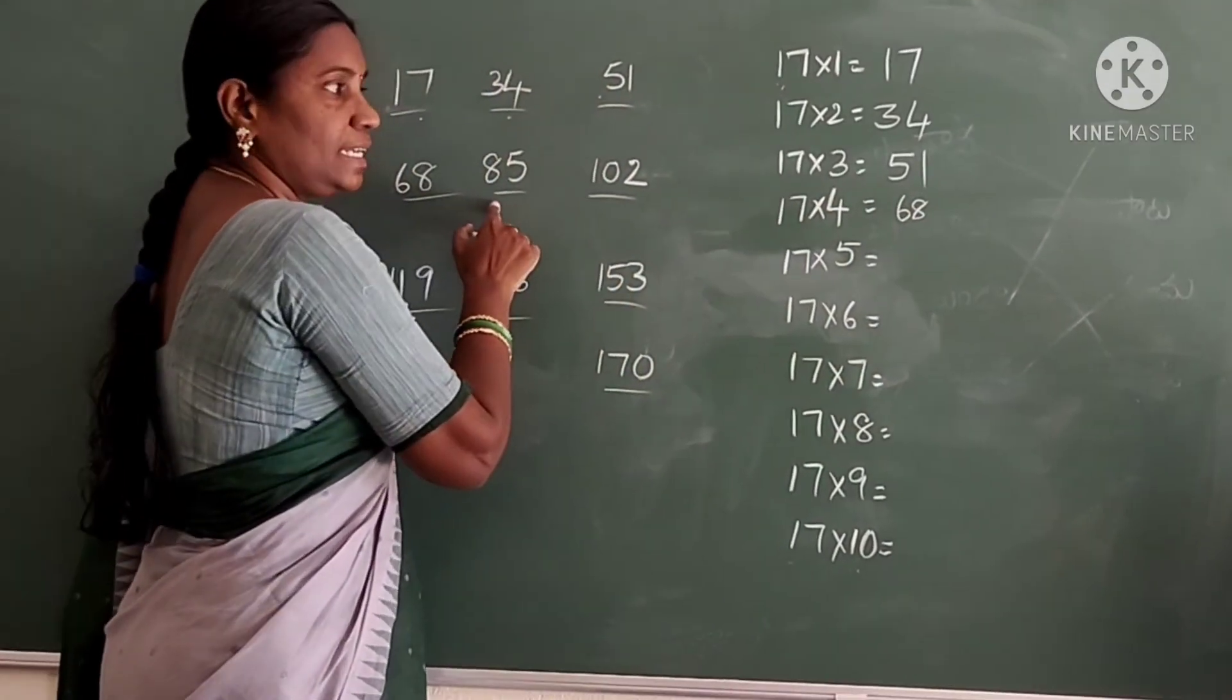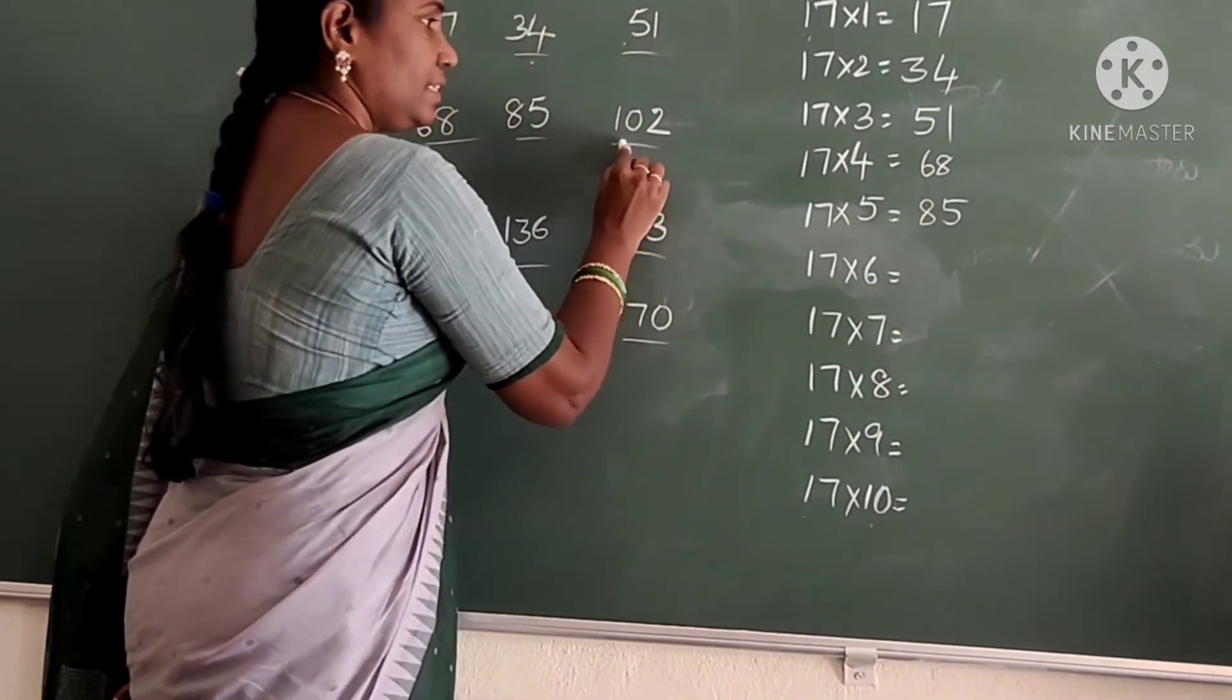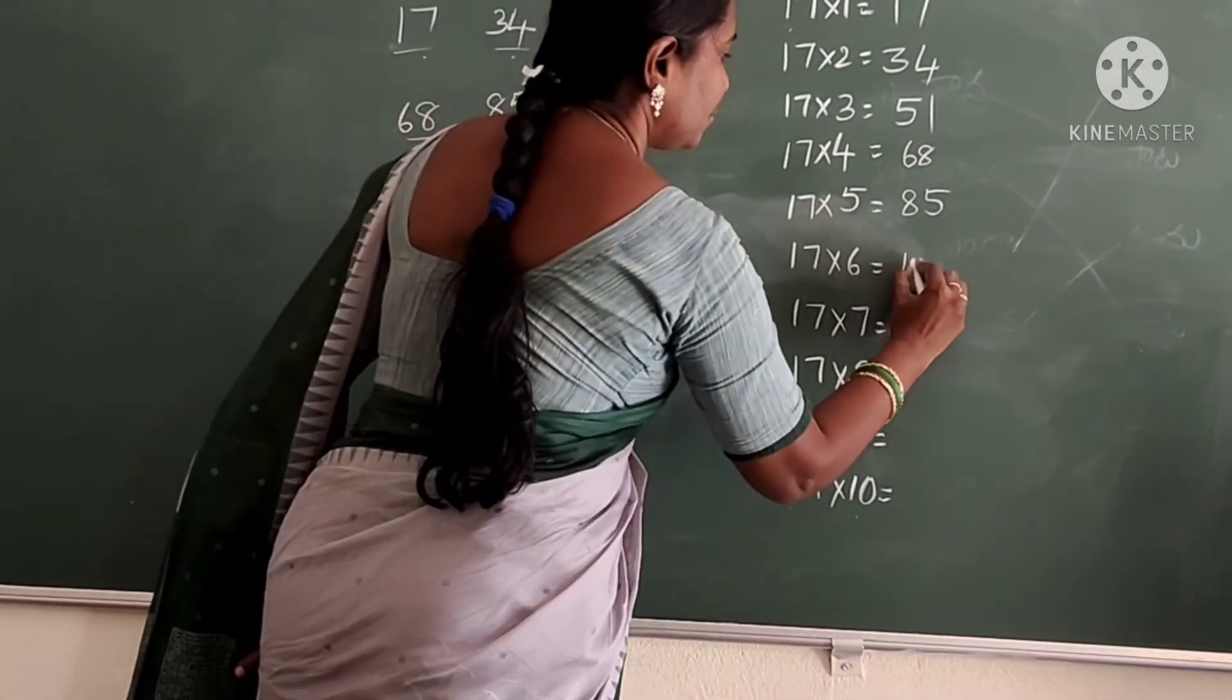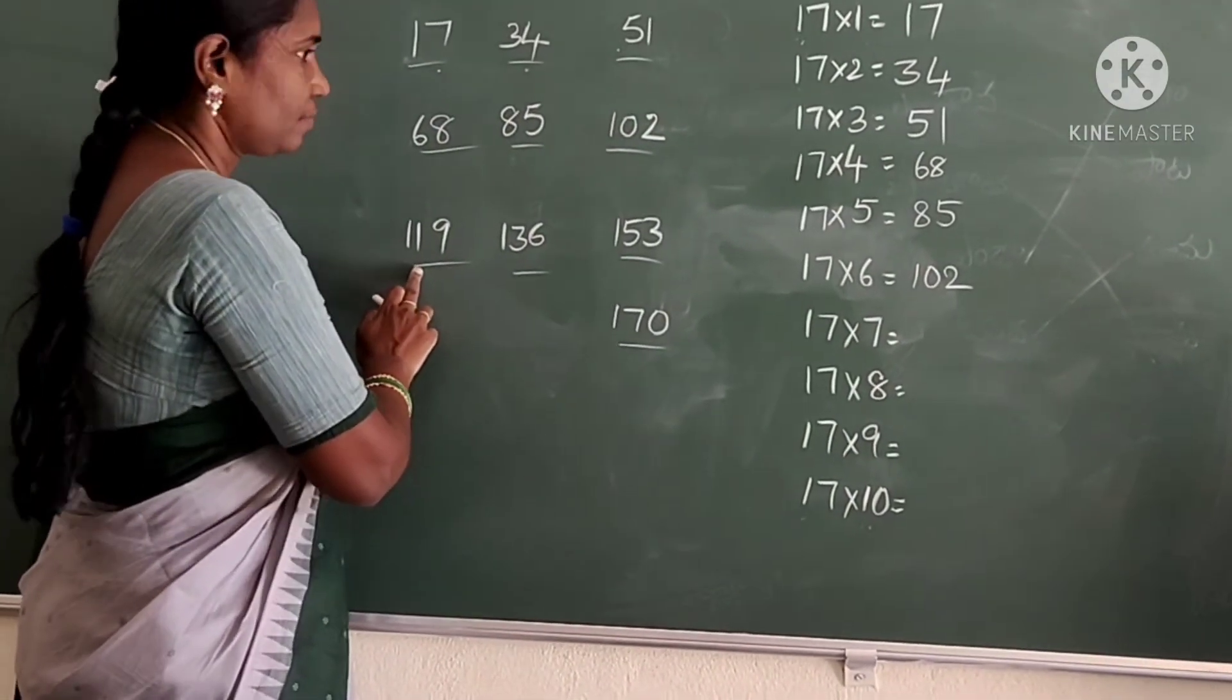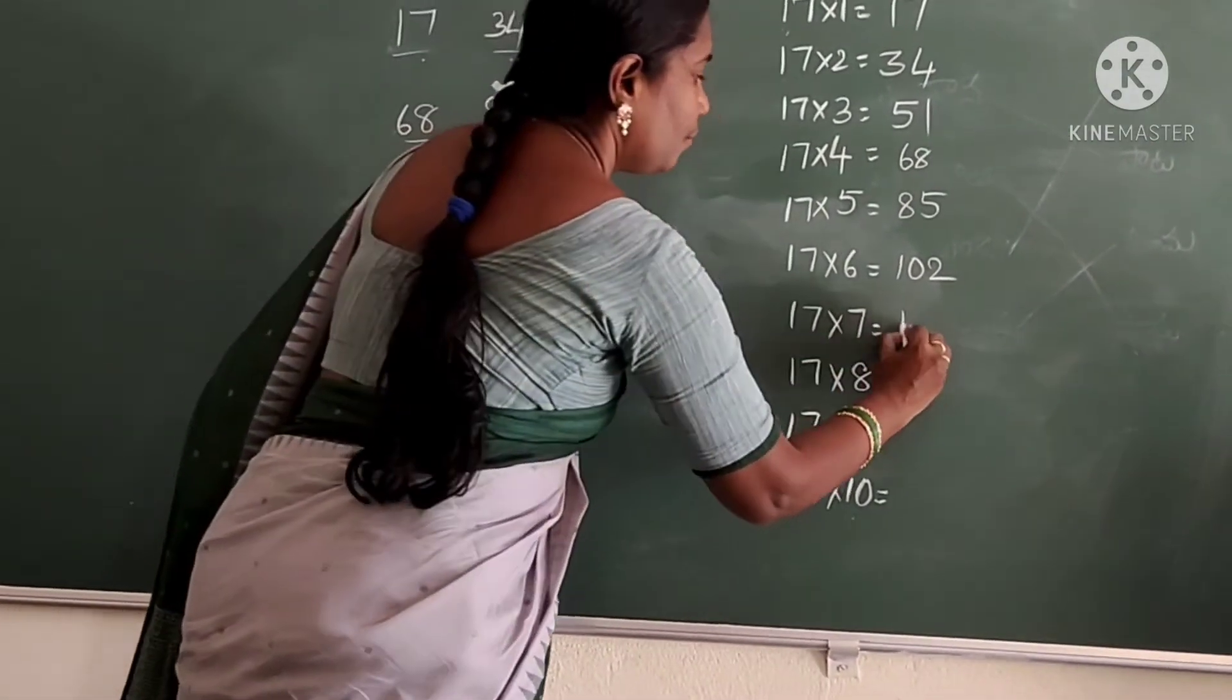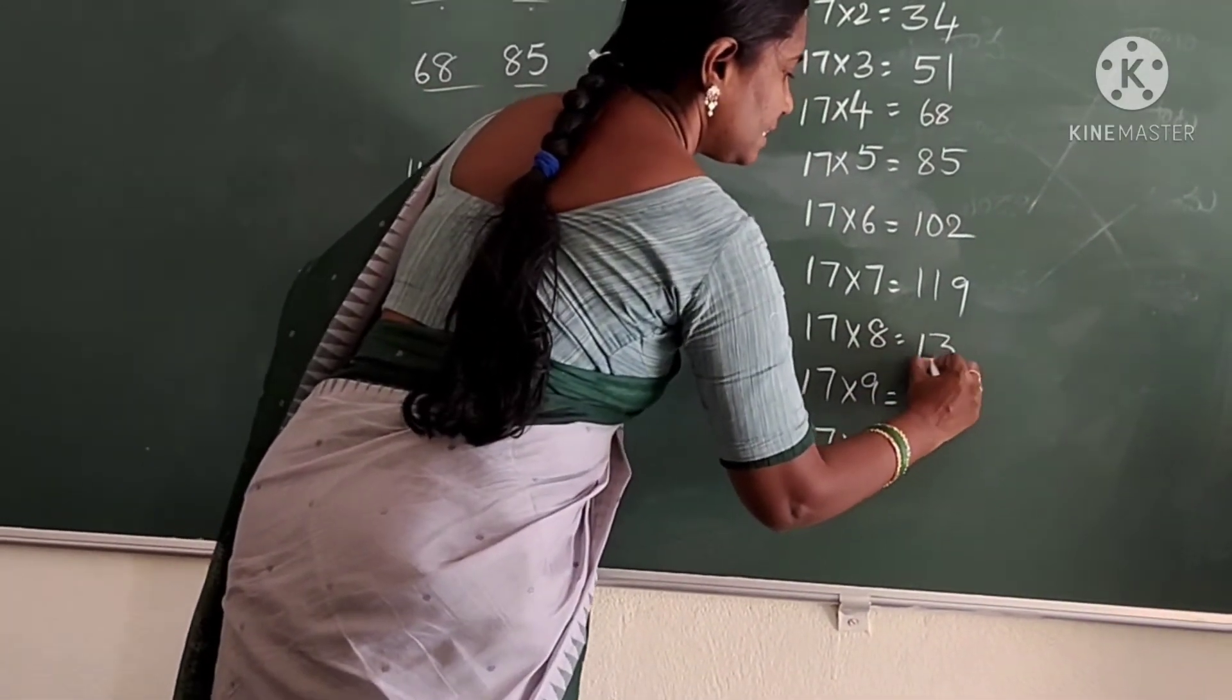And 17×5 is 85. 17×6 is 102. And 17×7 is 119.